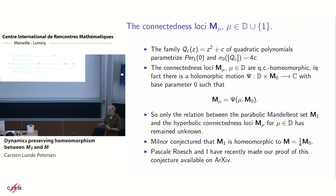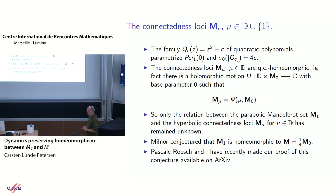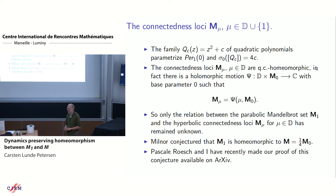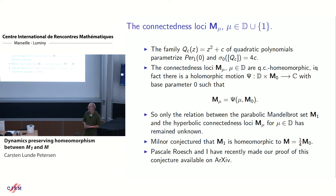The only remaining question when you want to compare these connectedness loci is what can you say about M1 and its relation to the others. Milnor conjectured that in fact M1 is homeomorphic to M, which of course is one-quarter M0. Pascal and I have been working on this for many years, made several publications on the way. It was announced a long time ago that we have a proof, but only this summer we produced the manuscript. It's now available on arXiv—sort of like Jurassic Park, now it appears—and that's what I want to talk about.